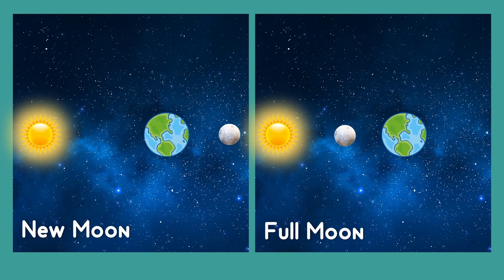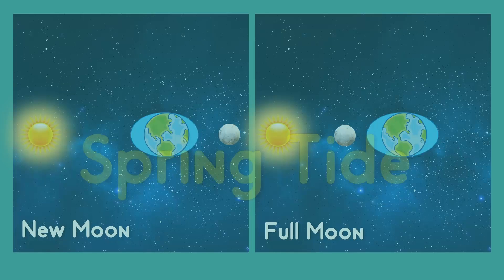Around the new moon and full moon, when the sun, moon, and the earth form a line, the solar tidal force will add up with the moon's tidal force. As a result, the tide's range is at its maximum during the full moon and the new moon. This is called the spring tide.